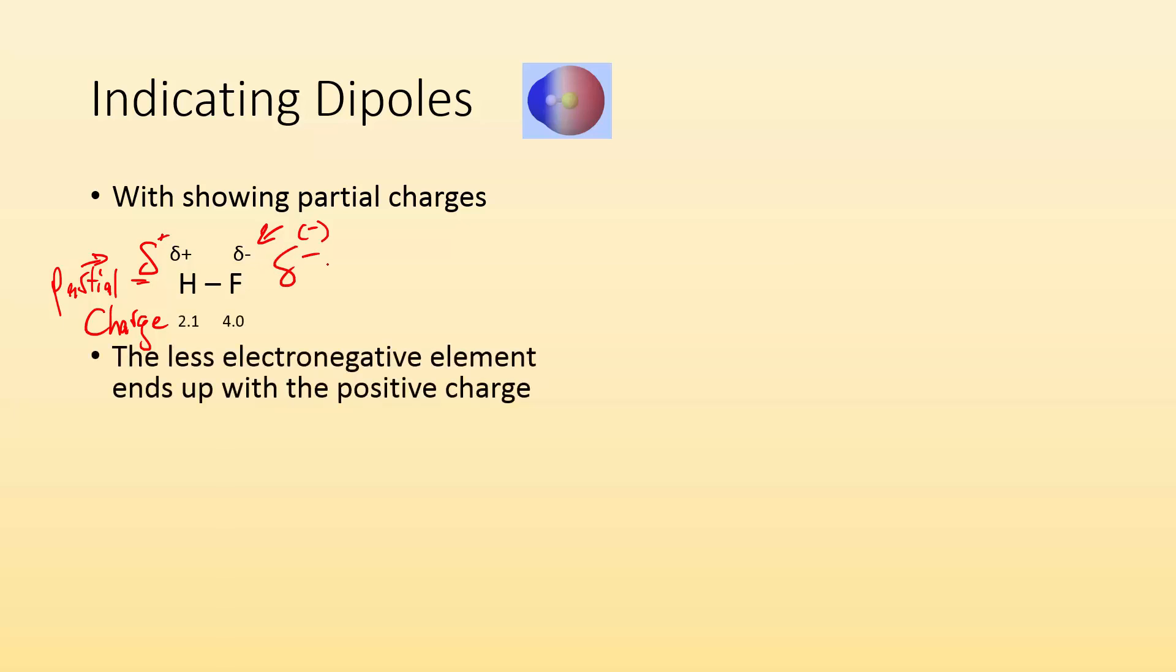So how do we indicate these dipoles? If we're drawing these Lewis structures and we have these polar bonds, how can we show the polarity of these bonds? One, we can show partial charges with this fancy-looking delta thing. You do a little delta with a plus showing that there's a partial charge on the hydrogen, a partial positive charge. And then the same thing but for the fluorine where it's a partial negative charge. The less electronegative element ends up with the positive charge because it's the one losing the tug-of-war. Fluorine's winning that tug-of-war. It's hogging those negative electrons more, so the negative electrons spend more time around it, making the fluorine negative and the hydrogen positive.